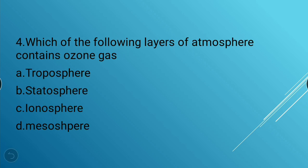Next question: Which layer of the atmosphere contains ozone gas? Options: troposphere, stratosphere, ionosphere, mesosphere. The answer is stratosphere — the stratosphere of the atmosphere contains ozone gas.